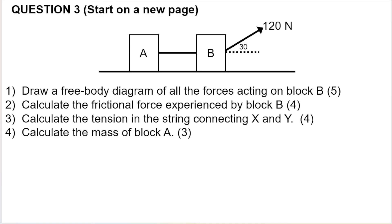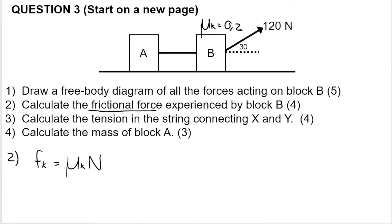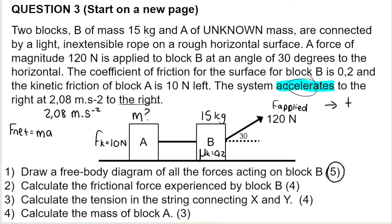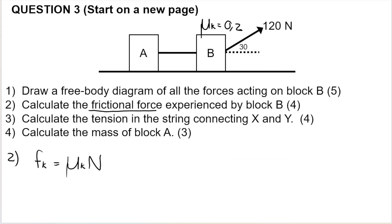The next question asks us to calculate the frictional force experienced by block B. When asked to calculate frictional force, the first thing to try is the formula F_k equals mu_k times FN. In this question, the coefficient of kinetic friction for B is 0.2. I can use this formula if I know the normal force — so I need to calculate the normal force for block B first.